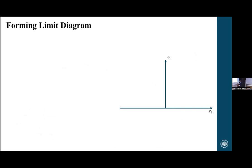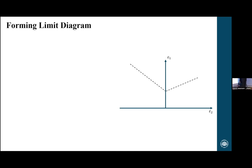Through experiments, we can determine what we call a forming limit curve — the dashed line on the diagram. When we run a simulation or experiment, we track movement on the component surface, determine the strains, and plot the major and minor strain pair for a specific point. If the point is below the curve, we're safe. If it's above, we're in trouble. That's how we assess failure today.